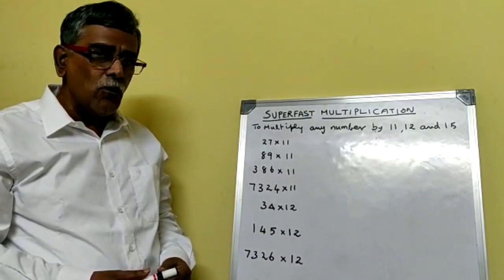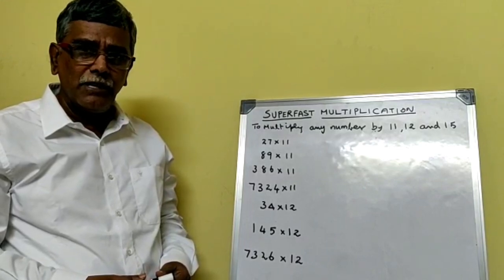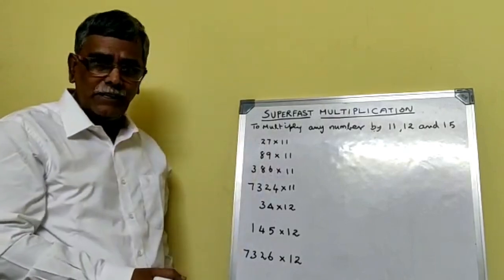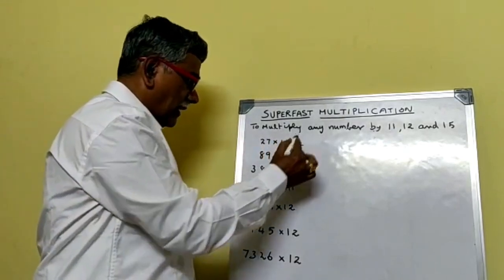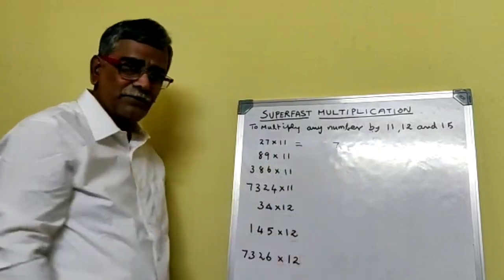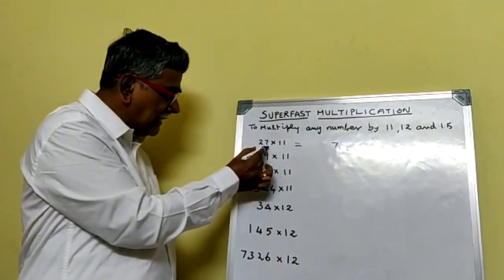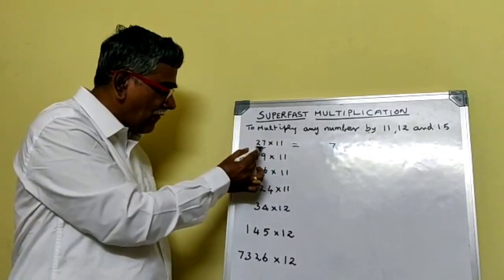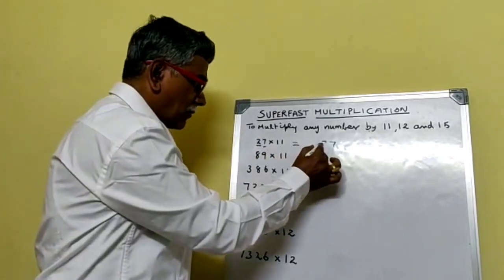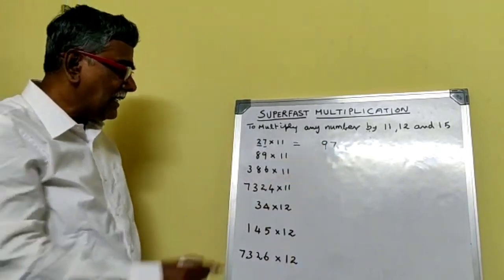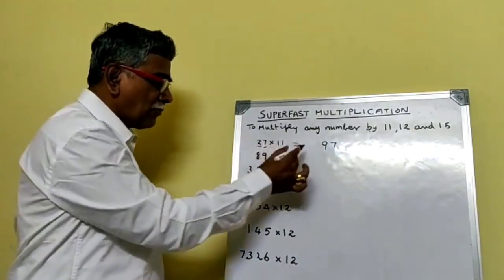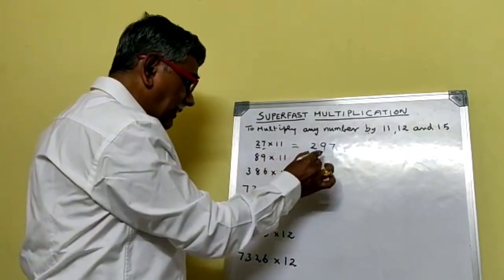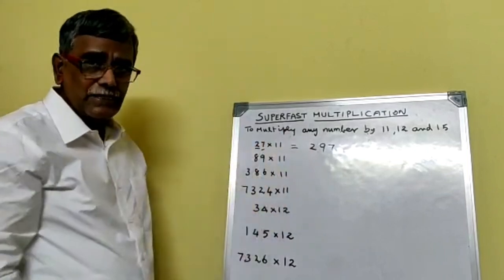First we will see how to multiply a 2-digit number by 11. Take an example: 27 into 11. In this case, you write the unit digit as it is — 7. Then add these 2 digits: 7 plus 2 is 9. And then put 2 as it is. So you write: 7, then 9 (7 plus 2), then 2. The answer is 297.